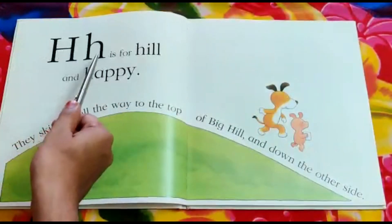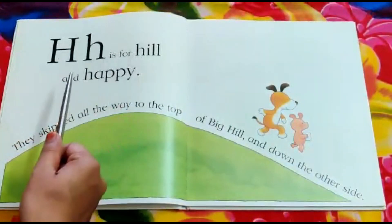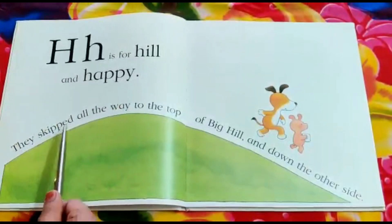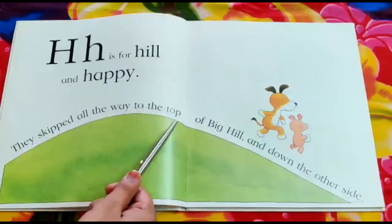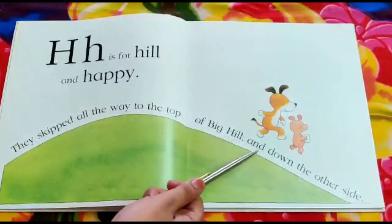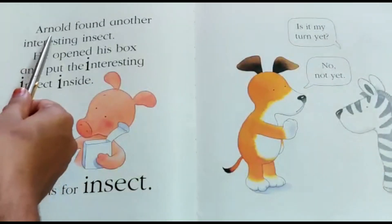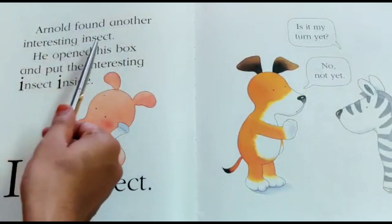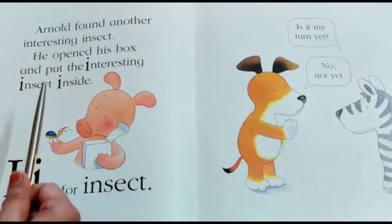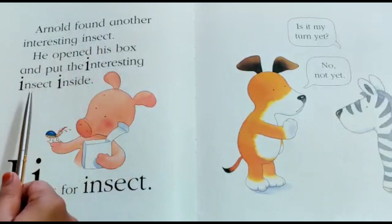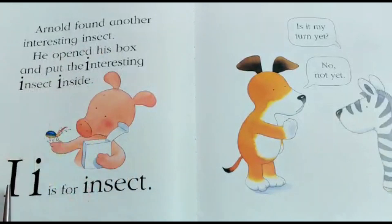H is for Hill and Happy. They skipped all the way to the top of Big Hill and down the other side. Arnold found another interesting insect. He opened his box and put the interesting insect inside. I is for Insect.